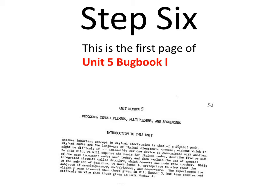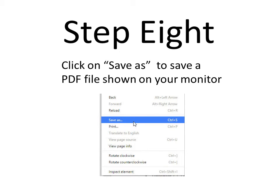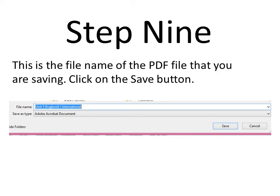Excellent. Now left-click anywhere on this first page. You get this window with menu items. Click on Save As to save the entire Unit 5 PDF file. Here is the file name in blue, and at the bottom right you have a Save button. Click on it.